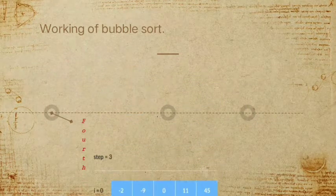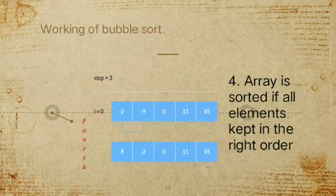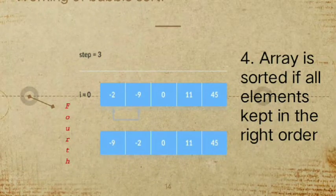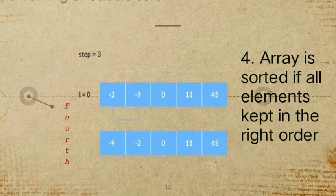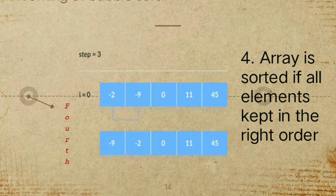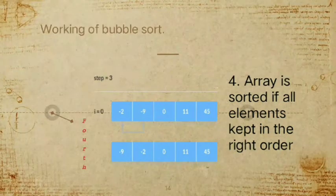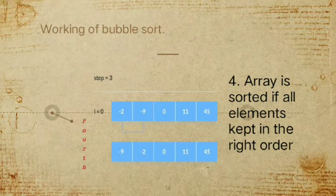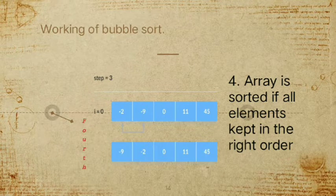In the fourth step, we compare index 0 to index 1. The value at index 0 is now negative 2 and index 1 is negative 9, so they swap since negative 2 is greater than negative 9. Our array elements are now sorted, but the algorithm does not know it is complete — it needs one full pass without any swap to confirm it is sorted.